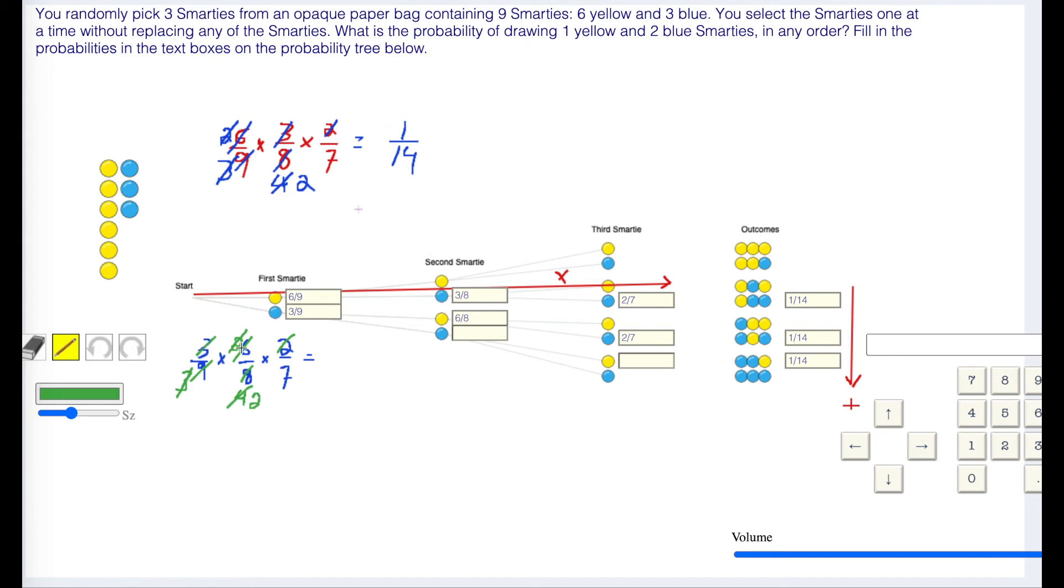On the top everything is cancelled. So it's 1 times 1 times 1 which is 1. On the bottom we have 2 times 7 is 14. 1/14 as predicted.